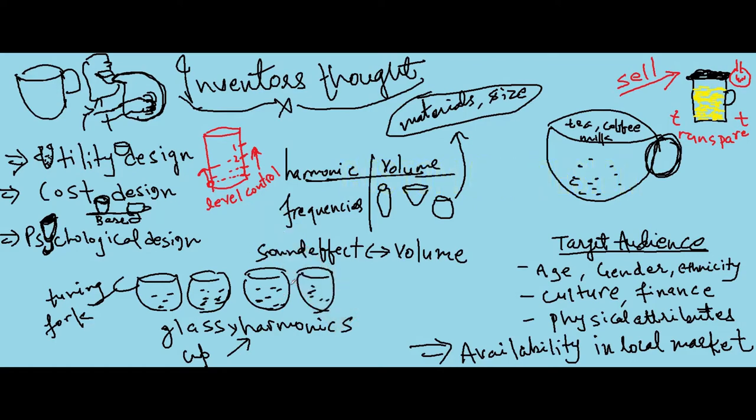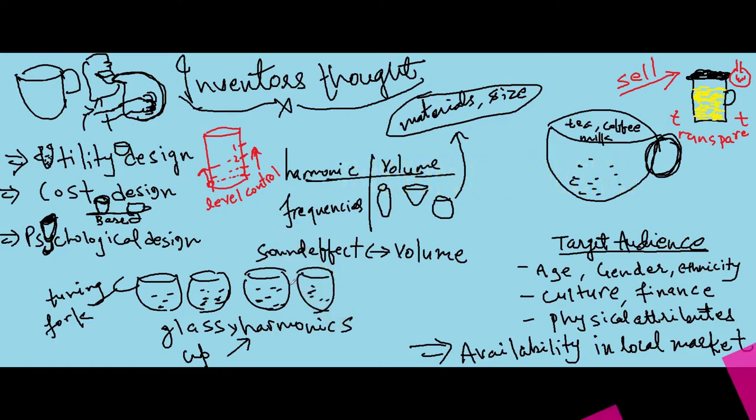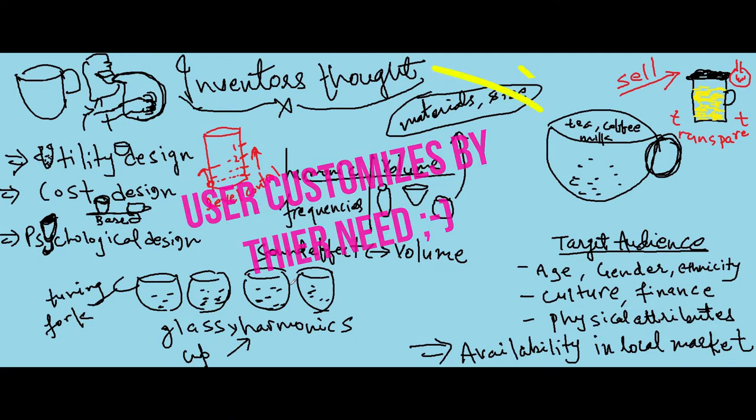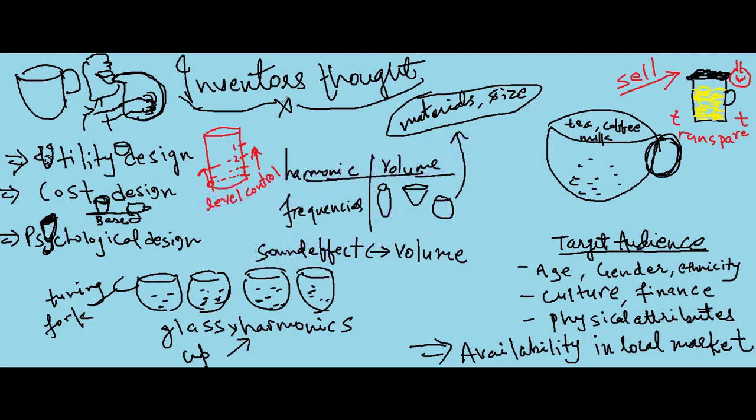Different target audience have multiple choices to use the same cup. They can use it for drinking tea, coffee or milk. When we say different target audience, it could relate to their age, gender, ethnicity, culture, their financial status, physical attributes as well.